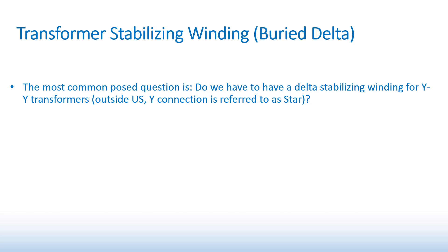The IEEE guide for the application of tertiary and stabilizing windings in power transformers, C57.158-2017, clarifies the difference between a stabilizing winding and a tertiary winding.